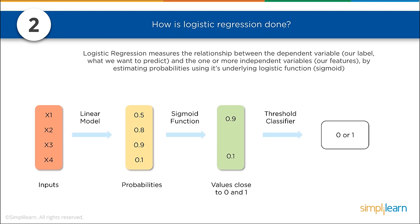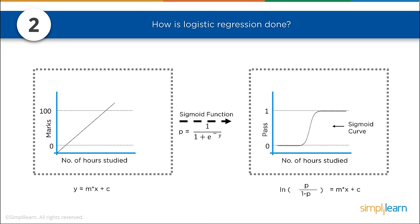How is logistic regression done? Logistic regression measures the relationship between the dependent variable — our label, what we want to predict — and one or more independent variables, our features, by estimating probability using its underlying logistic function, the sigmoid. When drawing these charts, you want to know your output first, then what's going in. We have our inputs, our linear model, our probabilities — what are the probabilities of it being a certain way based on these features? The sigmoid function turns our probabilities into a value between 0 and 1, and based on that we generate an answer: in this case a 0 or 1.